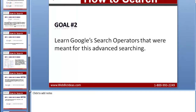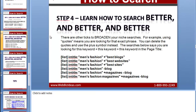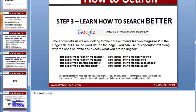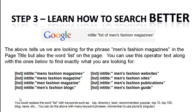You don't just have to use the word list. On our website in our PowerPoint we have other variations you could use. You could replace the word list with perhaps directory, best, recommended, popular, top 10, top 100, blog, or news — and you're going to have to play around with these words. Using these different variations is going to find more web pages about that topic, because not everyone puts the word list — a lot of times people use top 10 or top 100. That's another great way to find more resources, and it saves you time because these companies have already done that research for you.